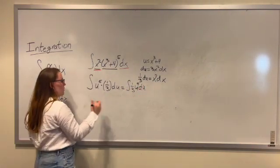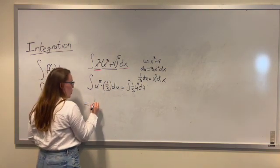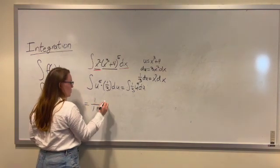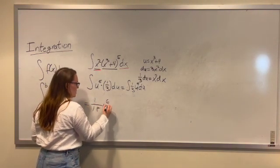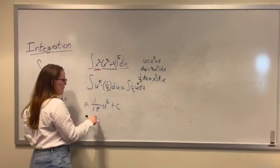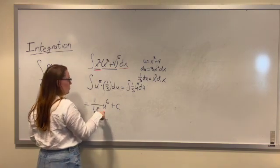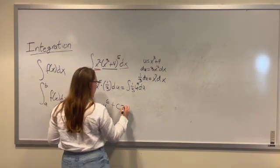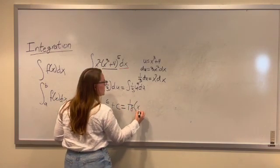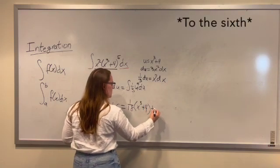Then when we integrate like normal, we get 1 18th u to the sixth plus c. And then finally we want to put everything back into x. So we plug our u back into this u. And we get that it's 1 18th times x cubed plus 4 plus c.